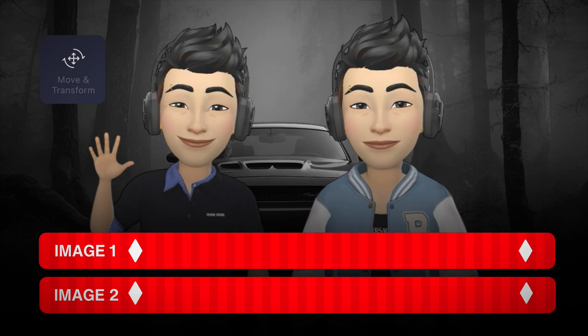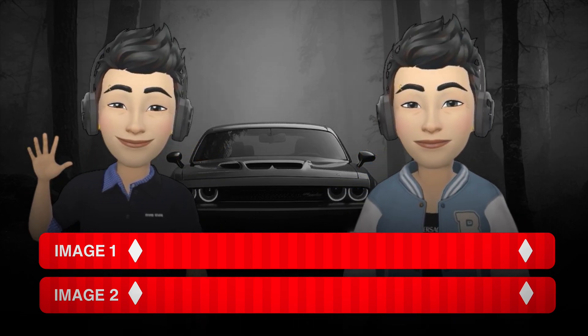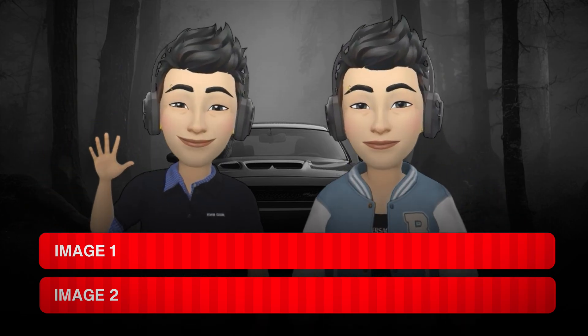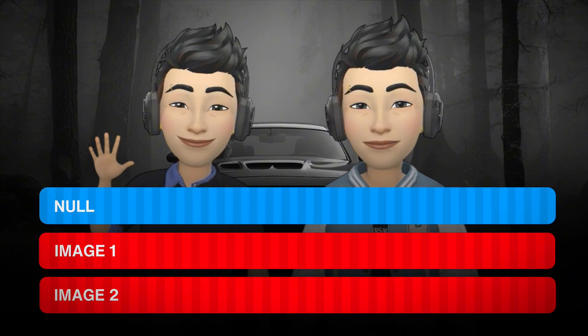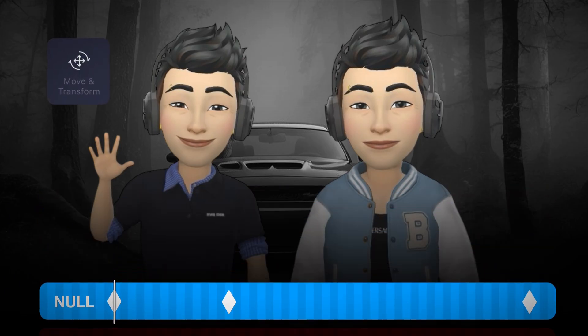With the move and transform feature you can animate each image by adding separate keyframes. But animating them one by one can be a very time-consuming process. That's where a null object comes in handy — by adding a null layer and connecting both image layers to the null object.